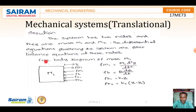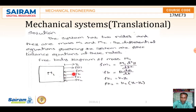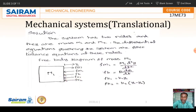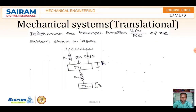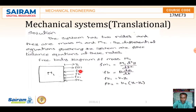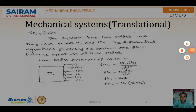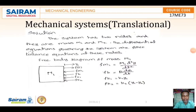In the free body diagram for M1, displacement Y1 is marked. The input force F(t) acts in one direction, while the inertial force of M1, spring forces K1 and K2, and damper force B resist it. The damper forces are noted as B1 and B2.